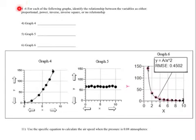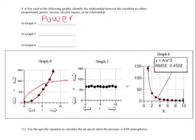For graphs 4 through 6, we're going to identify the relationship. If I look at graph 4, what I notice is that it follows a curve upwards. Because it's not a straight line, it's not a proportional relationship — this is an example of a power relationship. Now, power relationships can look different ways; they could look like this, or like this, but it's going to be curved and moving upwards.